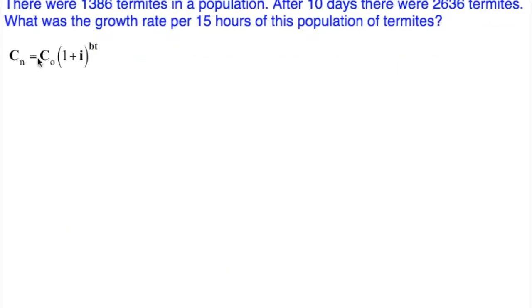Our growth function, C sub n is equal to C sub 0 times 1 plus our growth rate i, to the power of bt, where b is 1 over the period and t is the time.